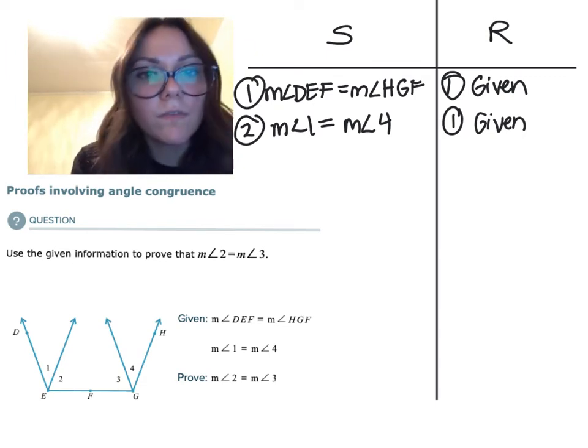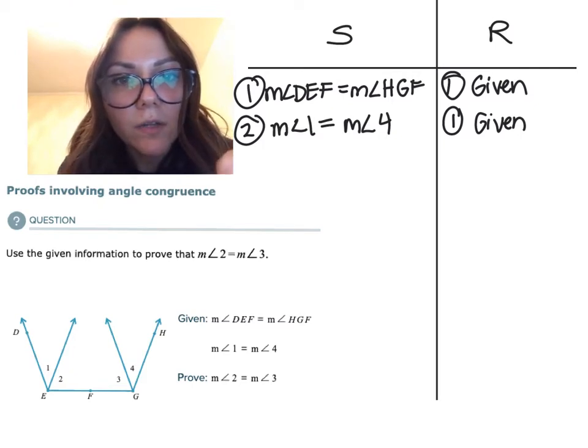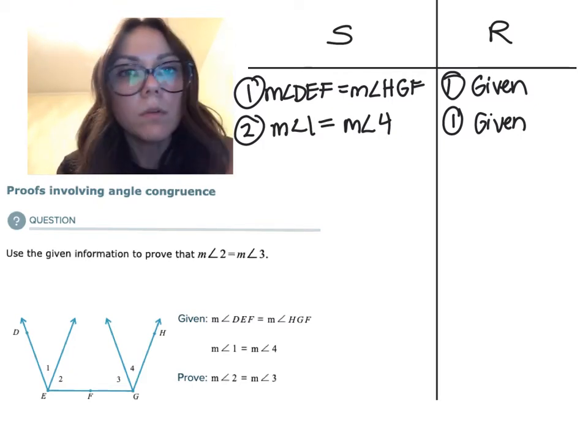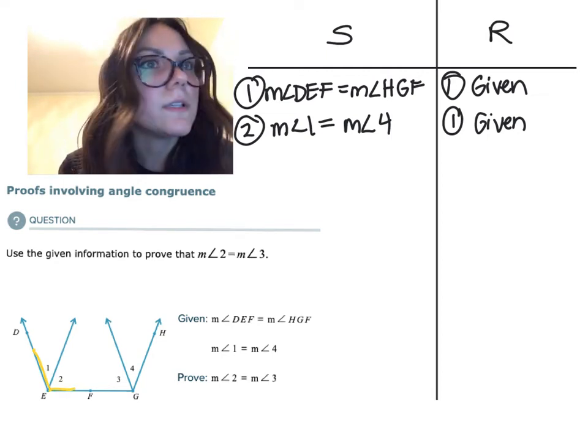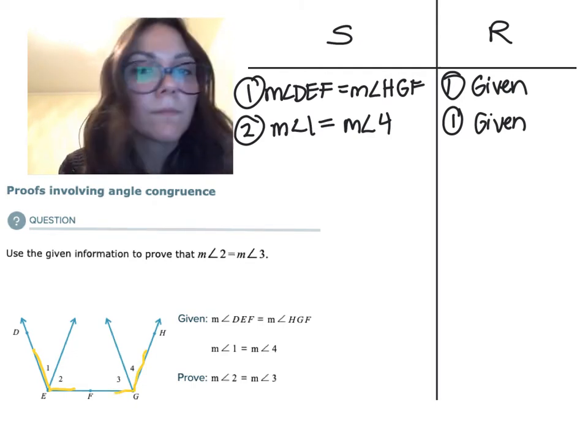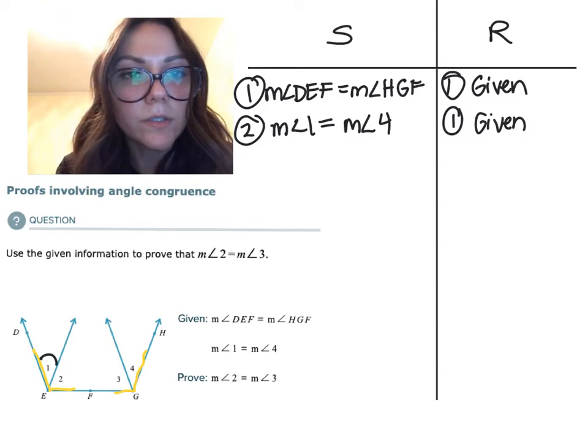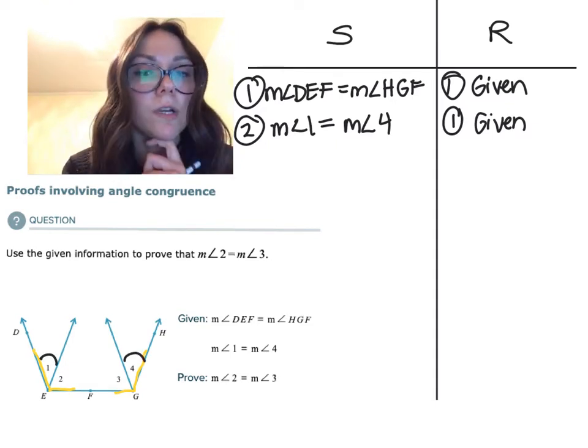Let's look at what I just wrote. Measure of angle DEF, which is a larger whole, is equal to the other whole. And then we're given that one of the parts is congruent. We eventually want to prove that angles two and three are congruent as well.